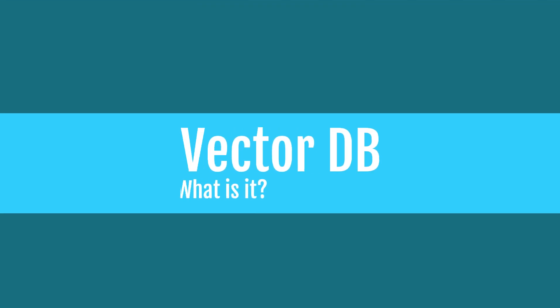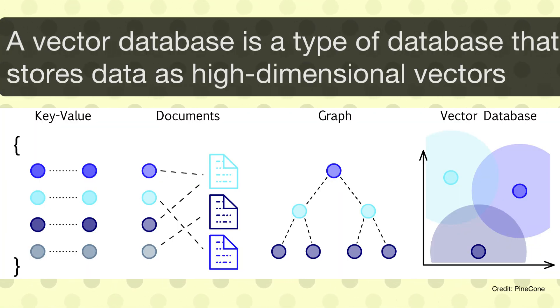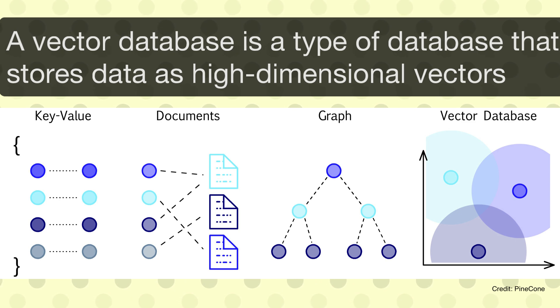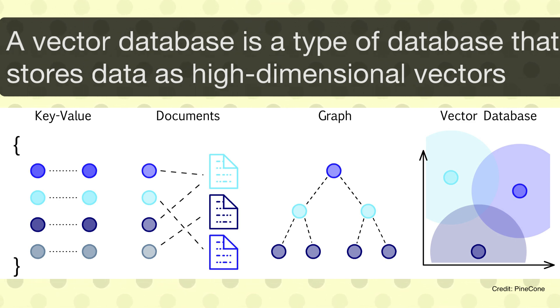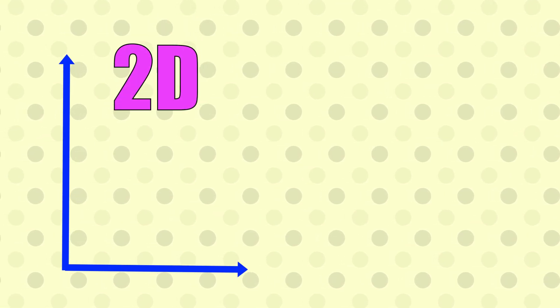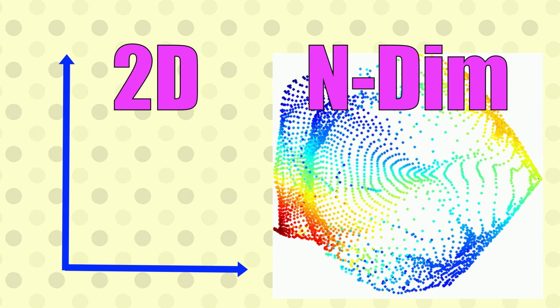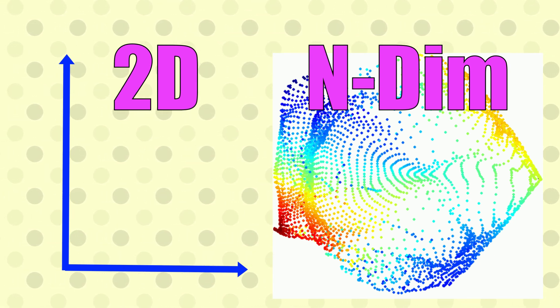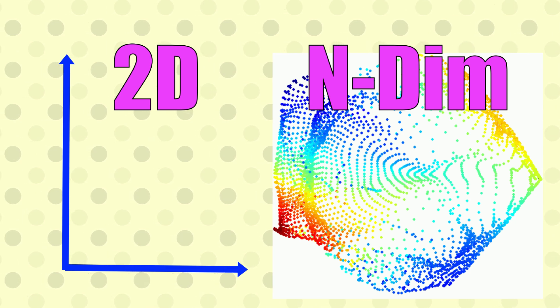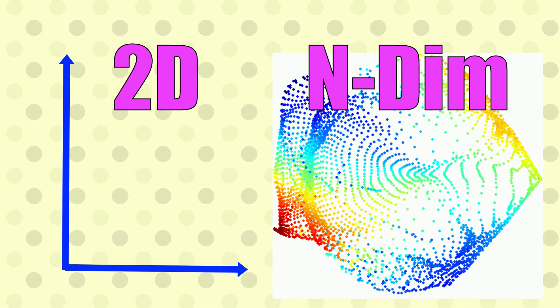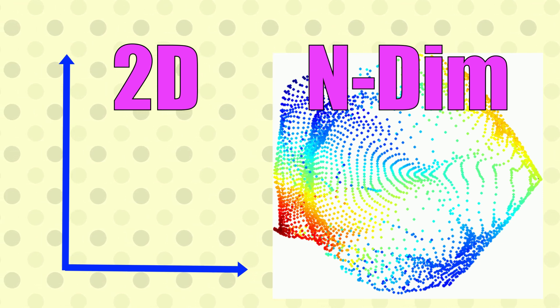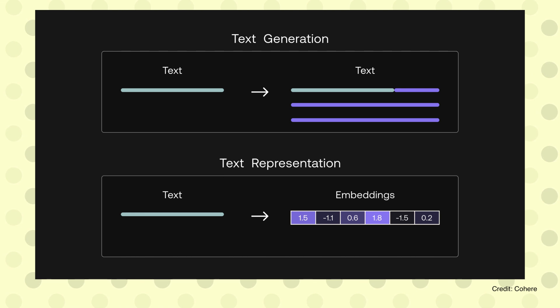So what is a vector database? A vector database is a type of database that stores data as high-dimensional vectors. What is a high-dimensional vector? If you have two columns, you can call it a bi-dimensional vector. If you have multiple columns, then you can call it a high-dimensional vector. It's like an n-dimensional space — imagine you have x and y axes, but you have a lot of axes. And in that n-dimensional space, you're storing data. These vectors are nothing but mathematical representations of features or attributes of the data.